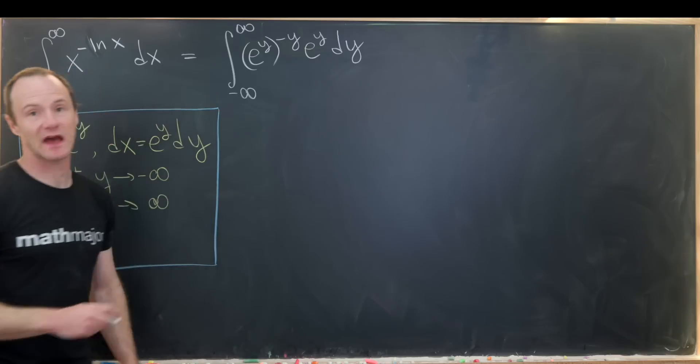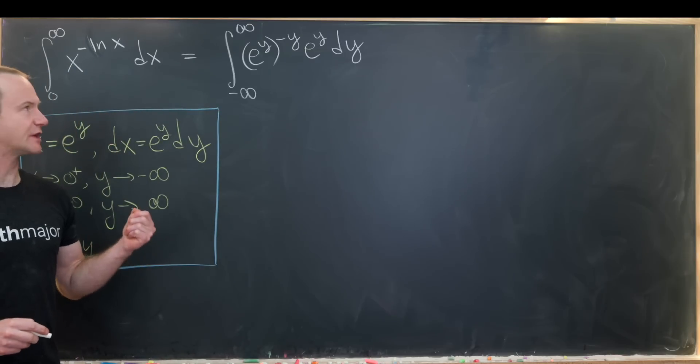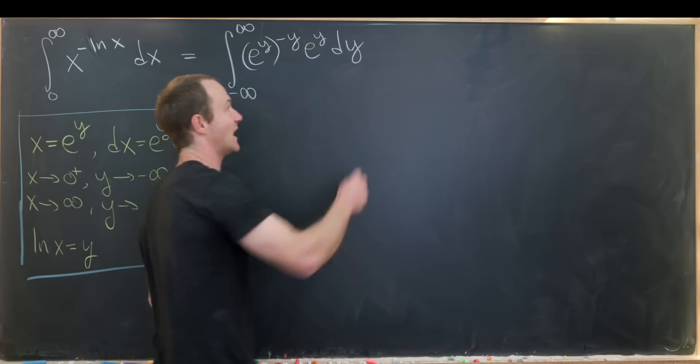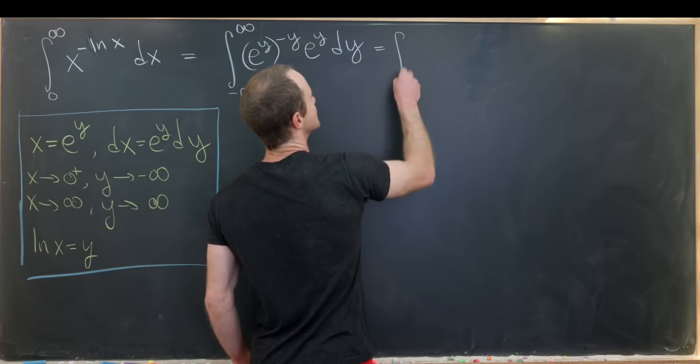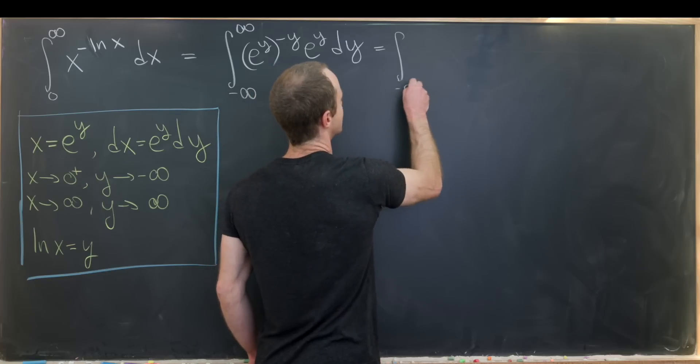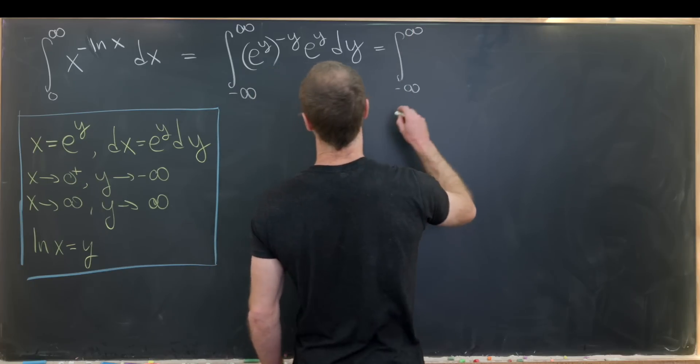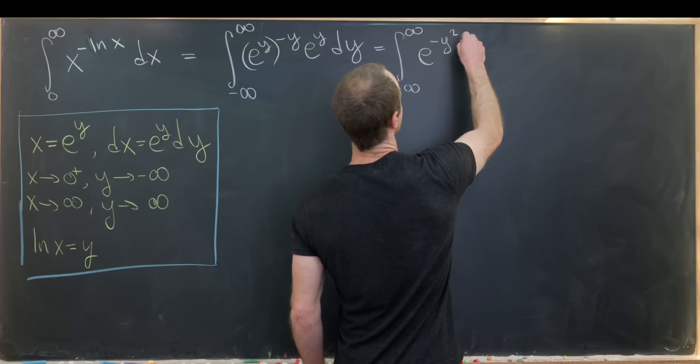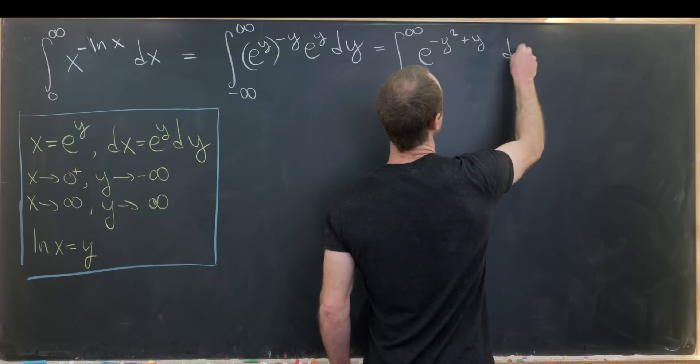So this is what we have going on here. Now, where should we go from here? Well, I think we should probably use exponent rules to simplify this integrand. So that'll give us something like the integral from minus infinity to infinity. And then we'll have e to the minus y squared plus y dy.